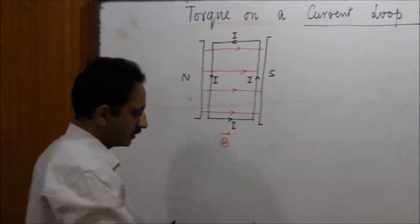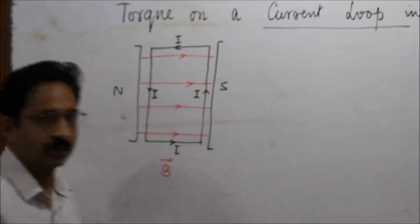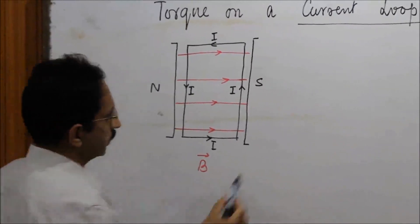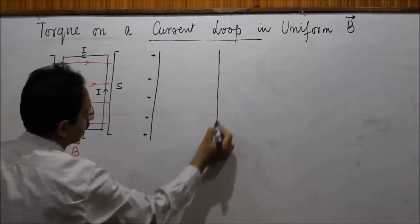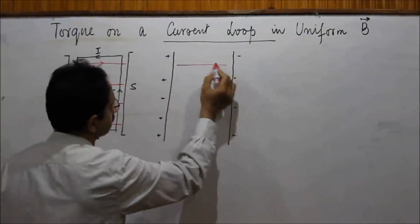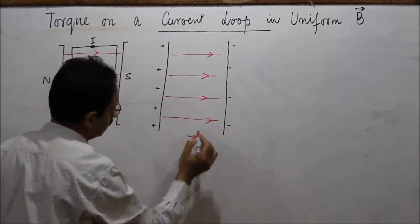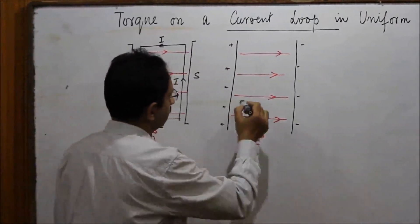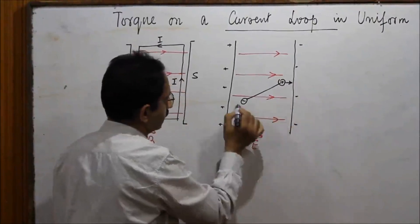This concept is best understood if we first consider what happens when an electric dipole is placed in a uniform electric field. The situation involves a positive plate and a negative plate creating a uniform electric field. An electric dipole consists of two equal and opposite charges separated by some distance. There is a force acting on the negative charge and a force acting on the positive charge.